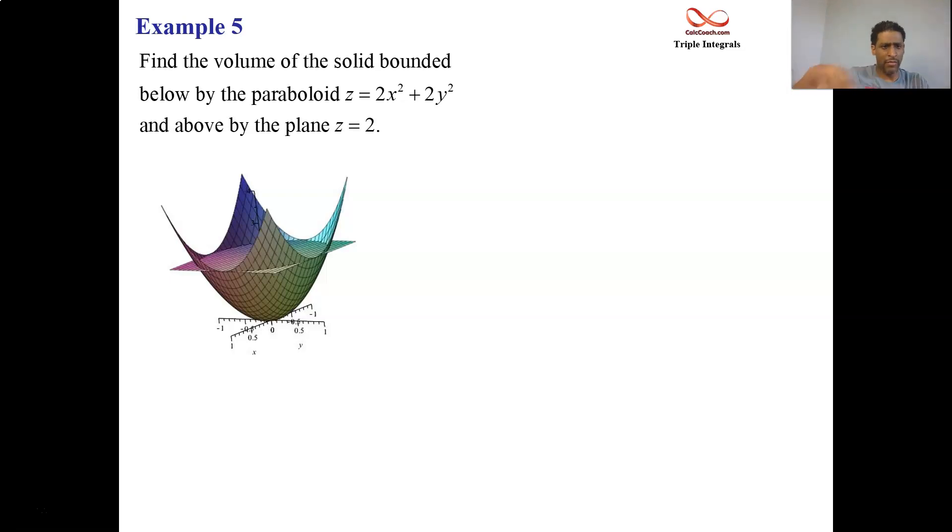So we have our plane two units off the xy-plane, parallel to the xy-plane, called z = 2. And then we have our paraboloid, which is given as 2x² + 2y², but I want you to think about factoring out the two.